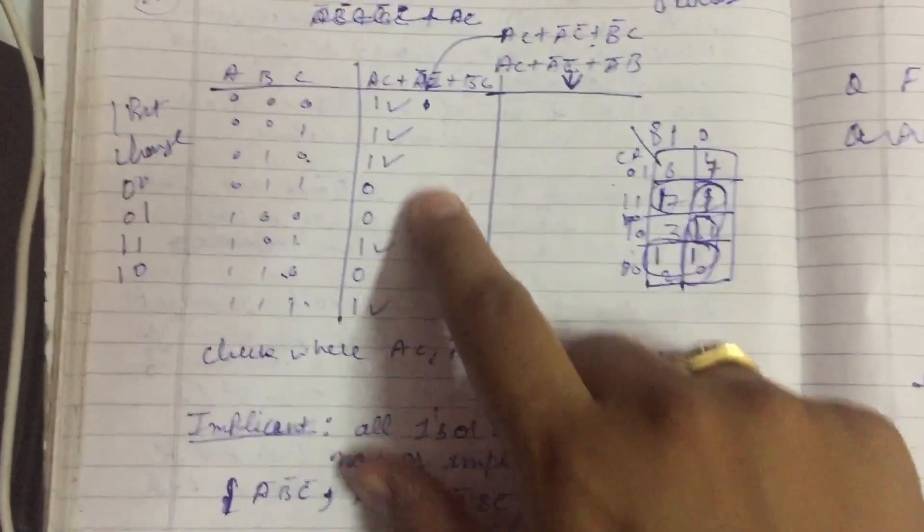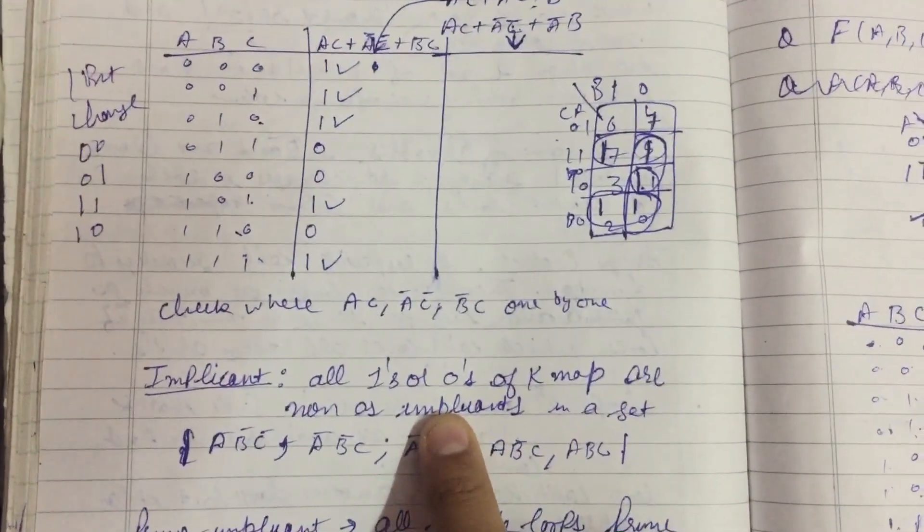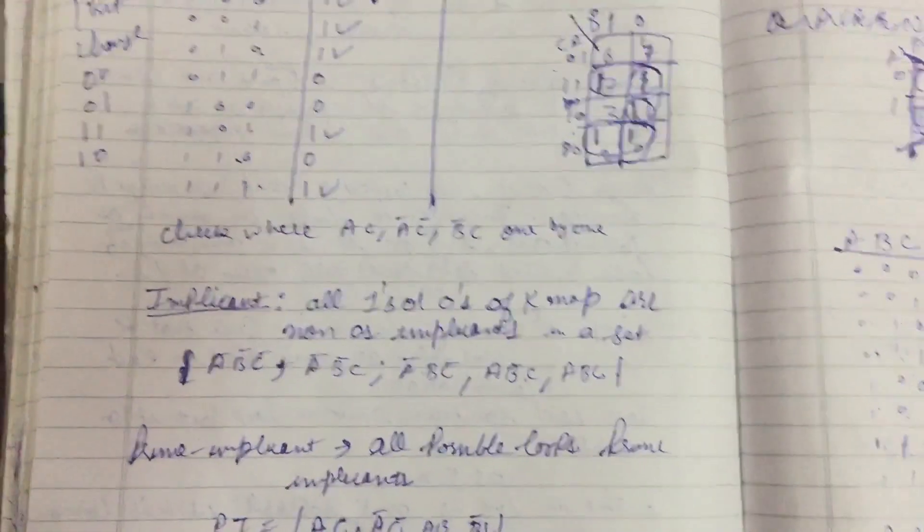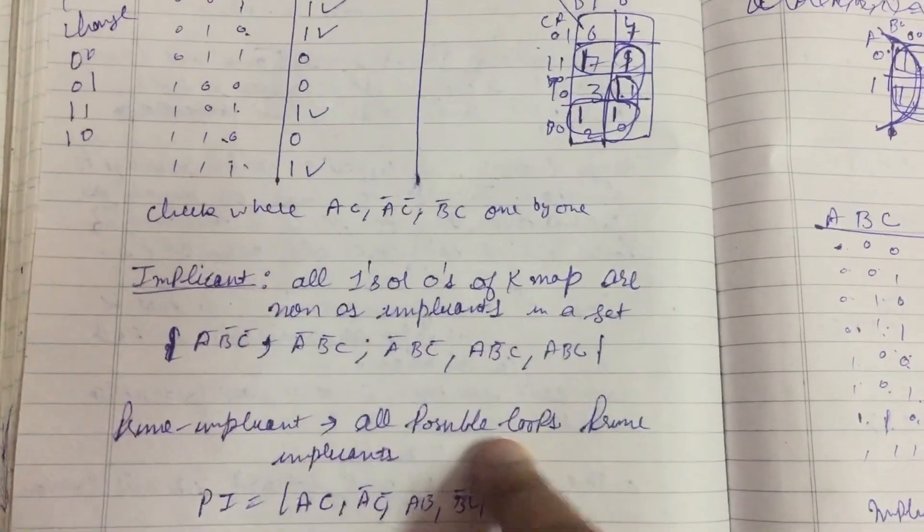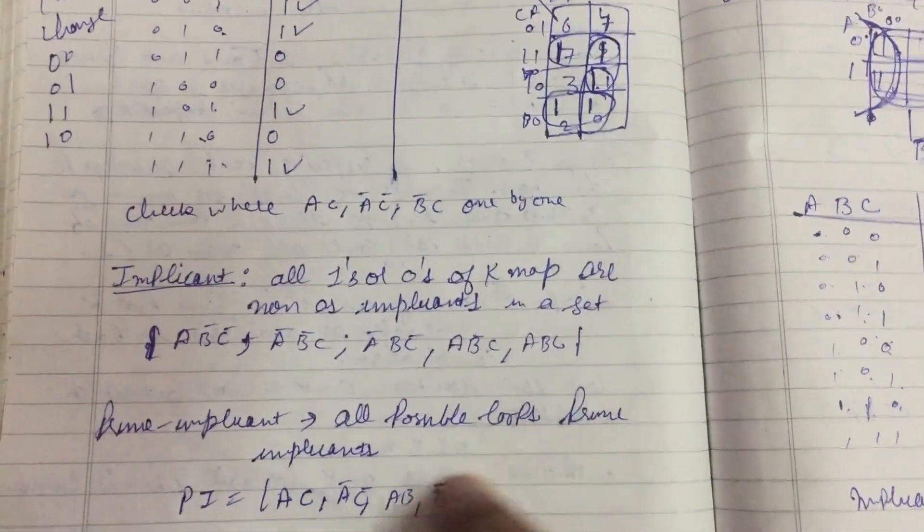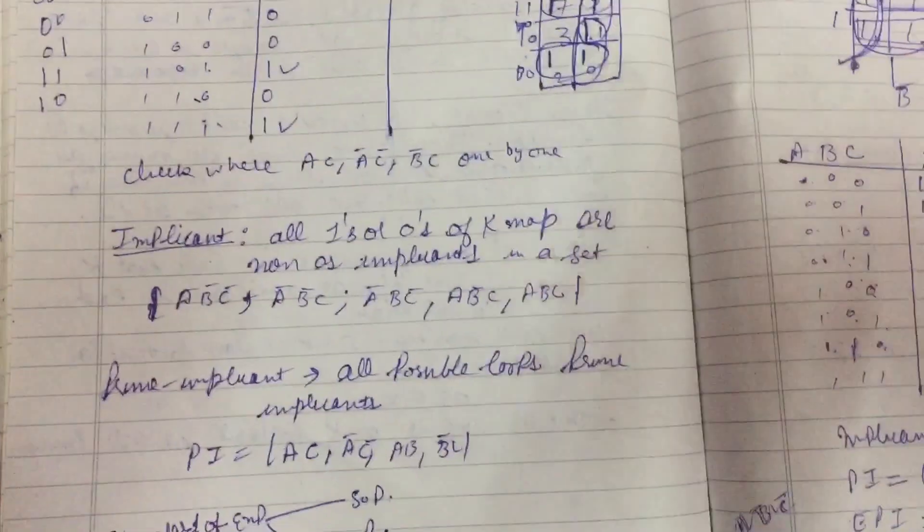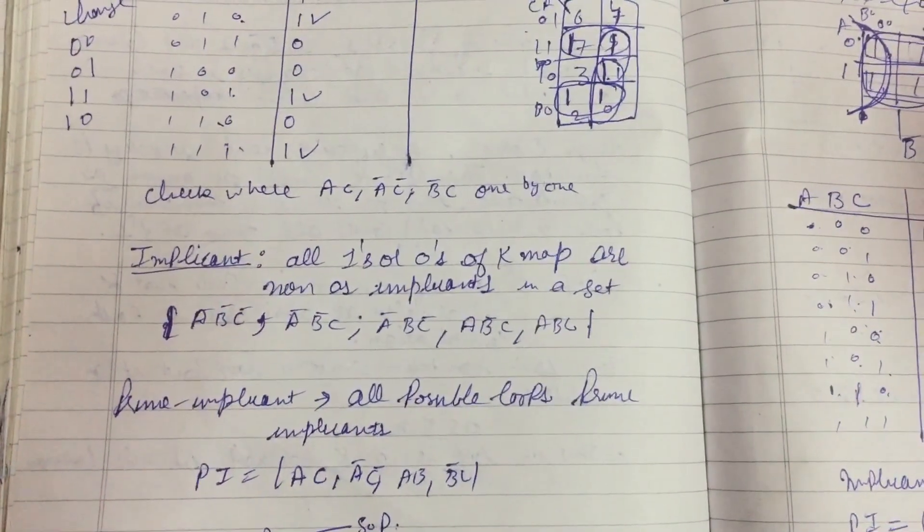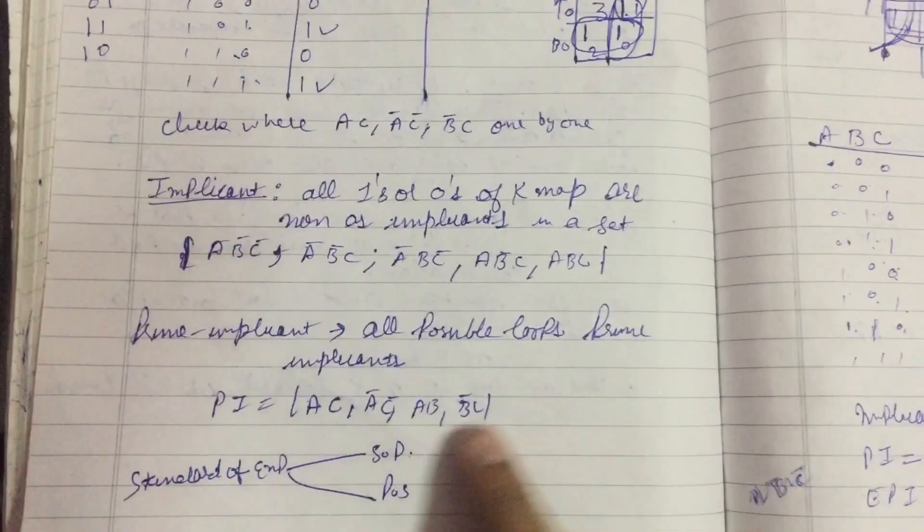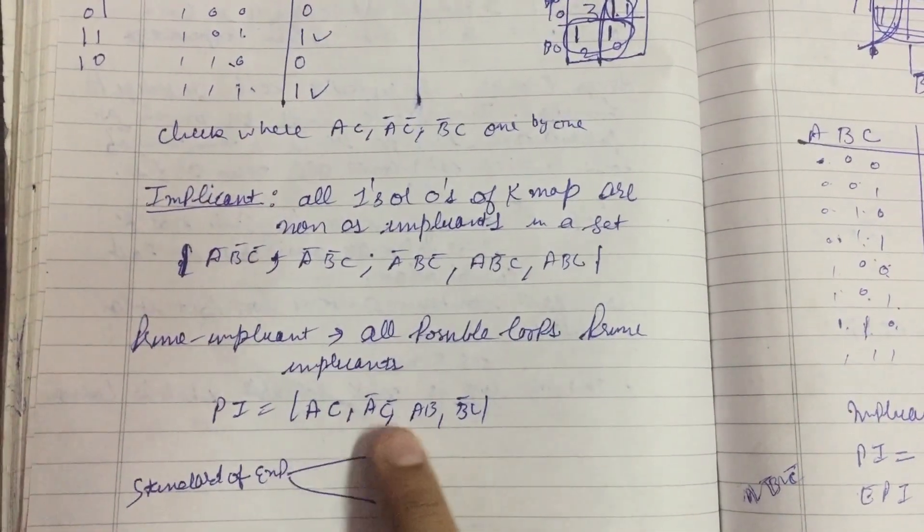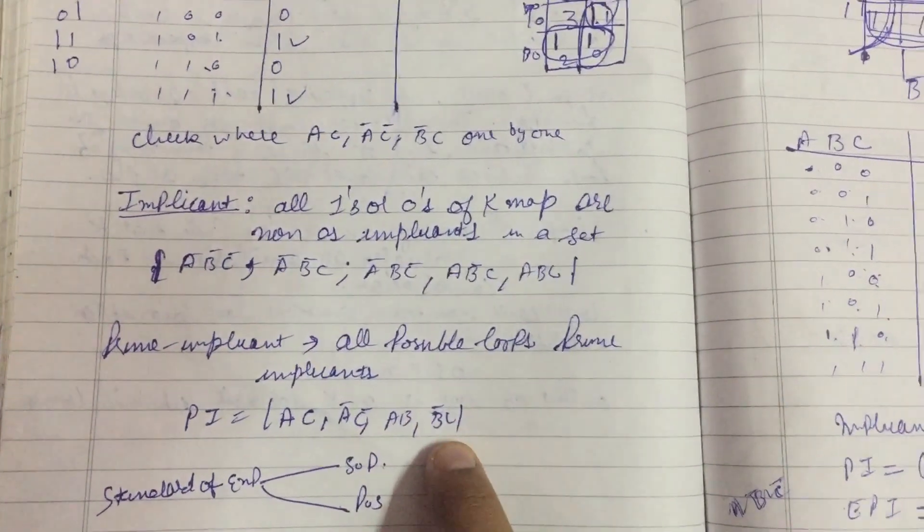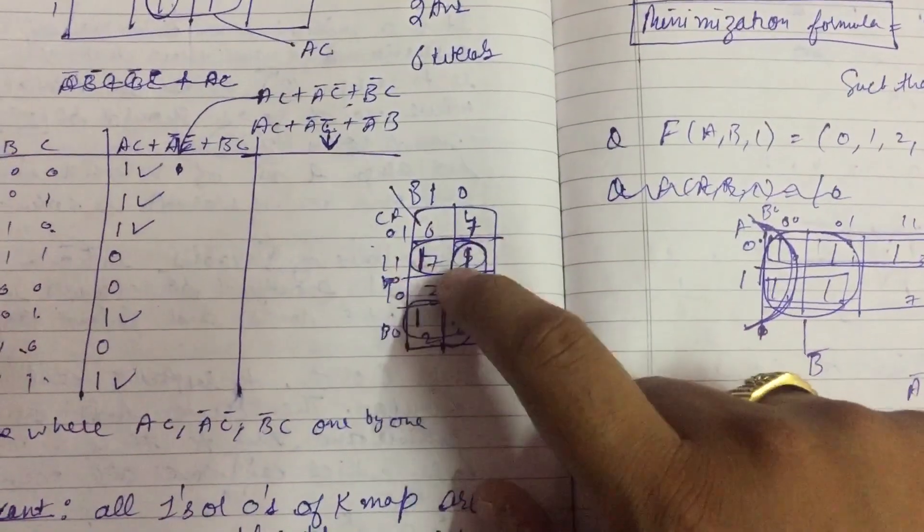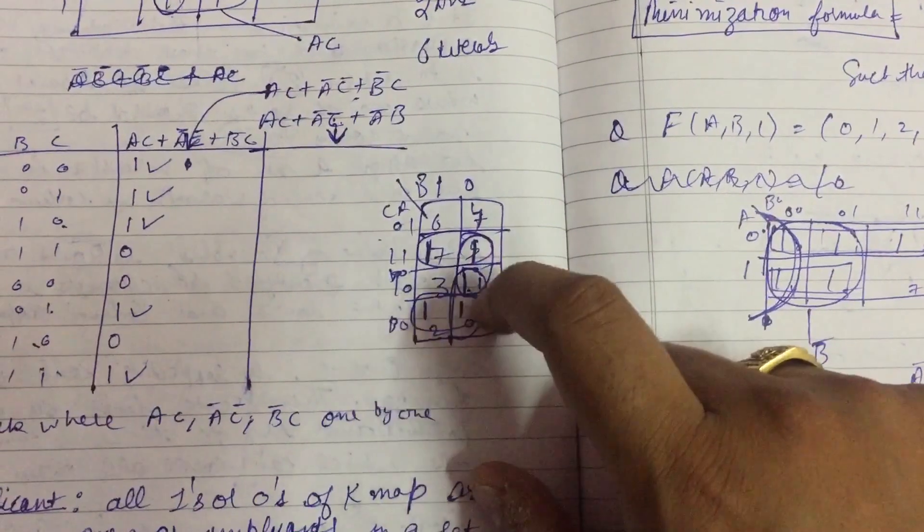So what are the prime implicants? Prime implicants are all possible loops. How many loops in K-map? All loops are prime implicant. Suppose we have four loops. Here is the example. I have solved four loops: one, two, three, and four loops.